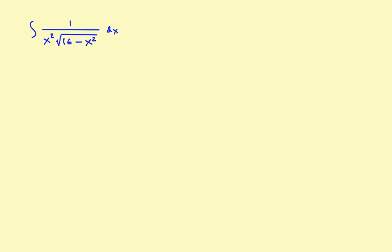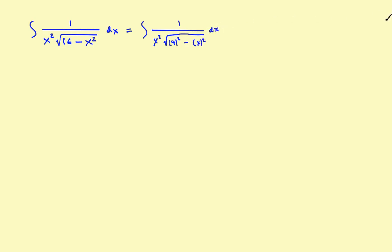Going back to the sample, I'll rewrite this in squared-minus-squared form: the integral of 1 over x squared times the square root of 4 squared minus x squared, dx. Here, a is equal to 4 and u is equal to x. As a reminder, the square root turns into a times cosine of theta, and u turns into a times sine of theta. Now it's just a matter of running through all the steps using the same process as last time.